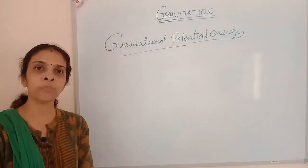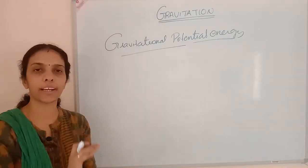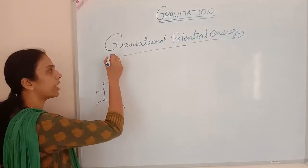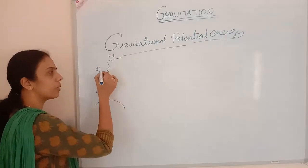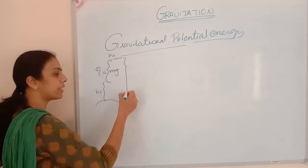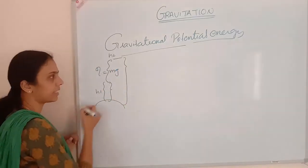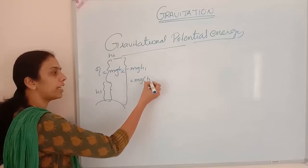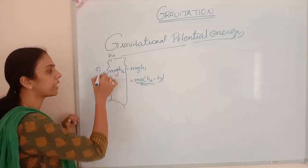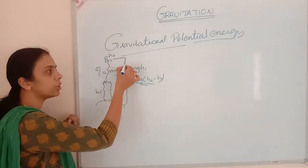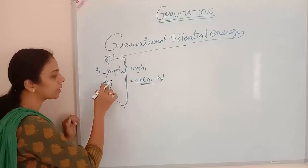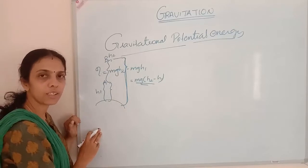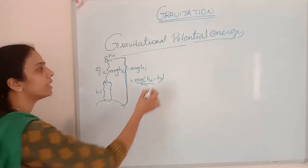Mg force is acting to take an object from height H1 to height H2. If an object is at height H1 and I want to take it to H2, the work done will be Mg·H2 minus Mg·H1, which equals Mg(H2 − H1). That is the work done to take an object from position A to B. This is valid for a fixed force.